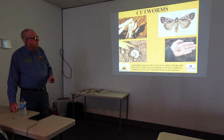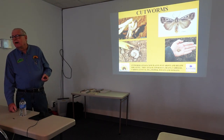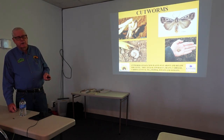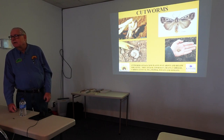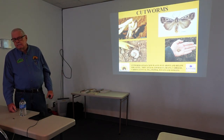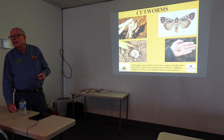Cutworms attack new plants just above or below the soil level. They attack asparagus, beans, cabbage, carrots, lettuce, peas, peppers, potatoes, and tomatoes — just about all of our common garden plants. If you have just a small garden to protect, you can put a piece of cardboard around the base of the plant to help reduce the damage. For a big garden, that's not a practical solution.